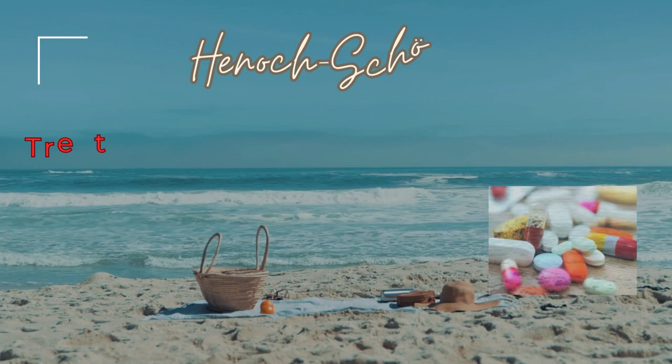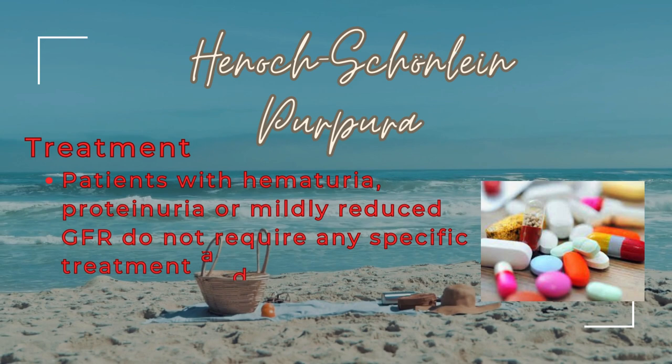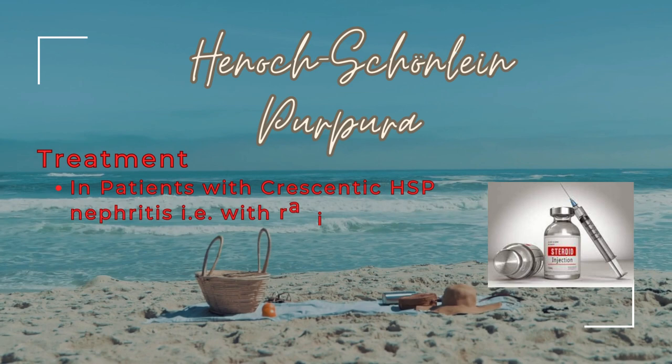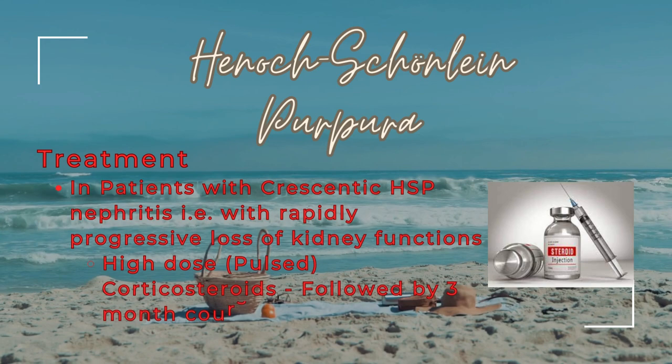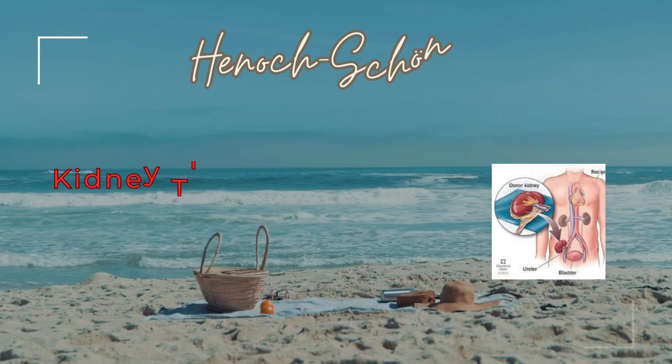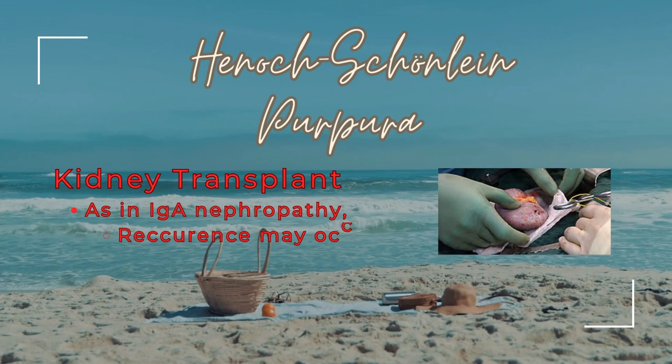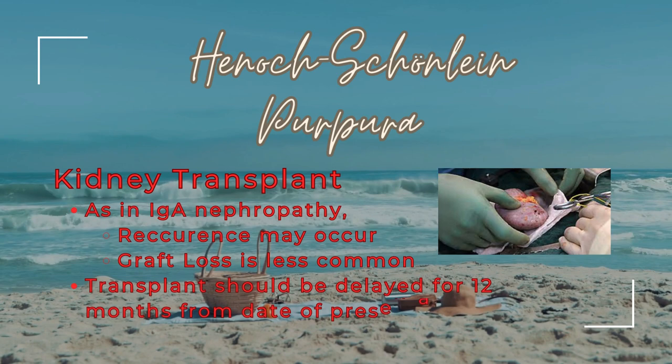Treatment: Patients diagnosed with HSP presenting with hematuria, proteinuria, or mildly reduced GFR do not require any specific treatment, and nephritis usually resolves spontaneously. In patients with crescentic HSP nephritis — that is, with rapid and progressive loss of kidney function — high doses of pulsed corticosteroids followed by a 3-month course of oral steroids might be beneficial. Kidney transplant is the treatment of choice in patients with ESRD resulting from HSP nephritis. As in IgA nephropathy, recurrence may occur, but graft loss with HSP is less common. Transplants should be delayed for 12 months from the date of presentation.